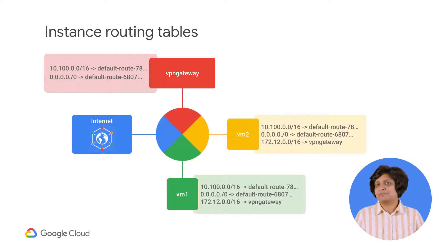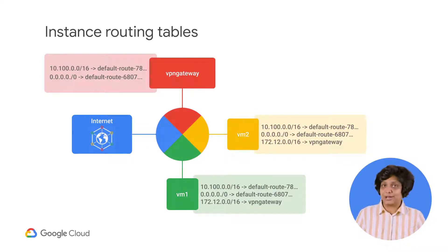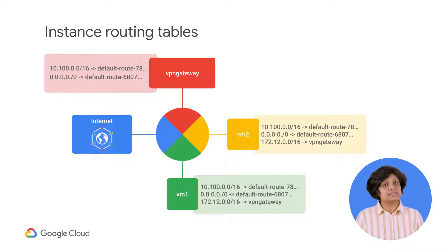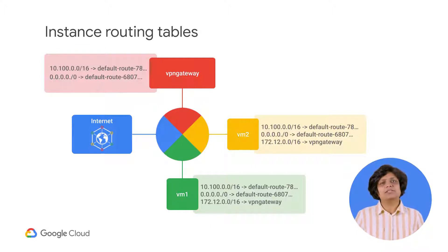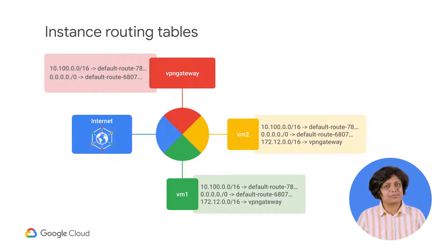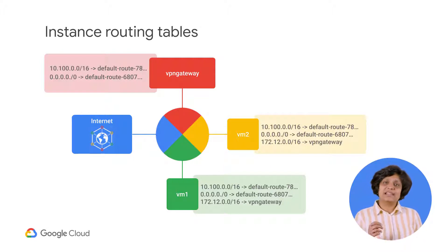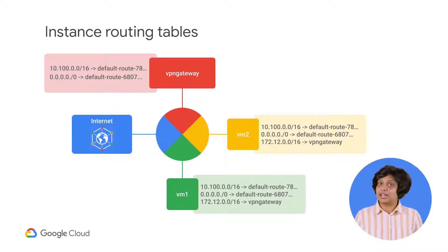This diagram shows a massively scalable virtual router at the core of each network. Every virtual machine instance in the network is directly connected to this router, and all packets leaving a virtual machine instance are first handled at this layer before they are forwarded to their next hop. The virtual network router selects the next hop for a packet by consulting the routing table for that instance.